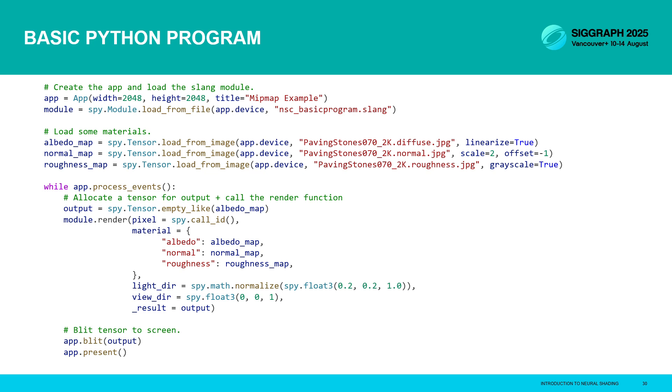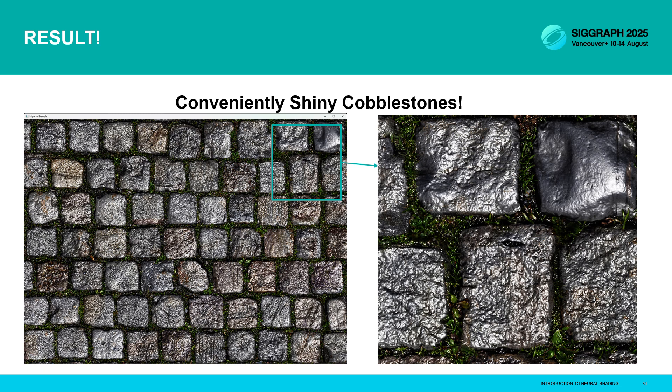So switching over to Python now, this is our whole SlangPy program on one slide. It starts with creating a window and loading our slang module. And we're going to load up our textures. And inside our main loop, we'll allocate a tensor to receive some results. And we'll pass the material along with a fixed light and view direction directly to the Slang render function. And SlangPy is smart enough to know here that since we're giving it some 2D grids of pixels, the albedo, the normal and roughness, and we're asking for a 2D grid of pixels back, it should generate a kernel that runs the render function once per pixel. So finally, once we've got our output, we'll render it to screen. So what we get when we run that simple program is a really pretty rendering of our high resolution 2K cobblestones. And if we look closely, you can really see that beautiful specular detail on the surface of the stones, which is created by the normal map, where the light is interacting with these sort of bumpy, detailed peaks and troughs.